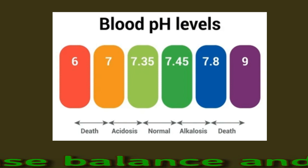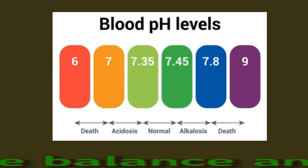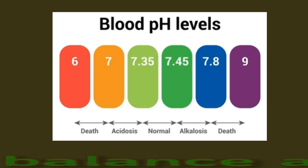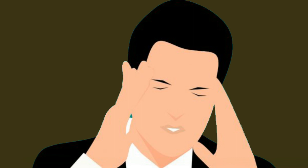Acidemia, which is highly acidic blood, occurs when the pH of the blood is lower than 7.35. Alkalemia, which is blood with a high level of base, refers to a pH higher than 7.45. Doctors classify acidosis as either metabolic or respiratory, depending on the main cause of the acid-base imbalance.